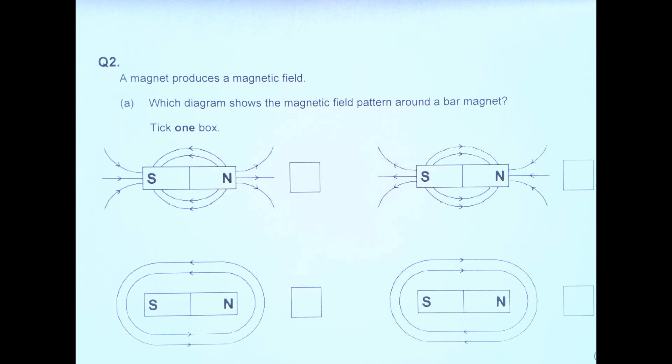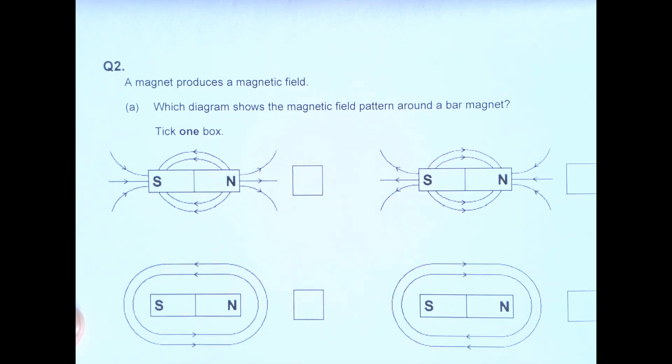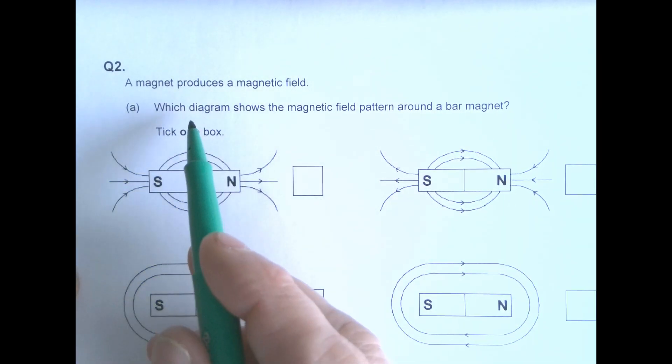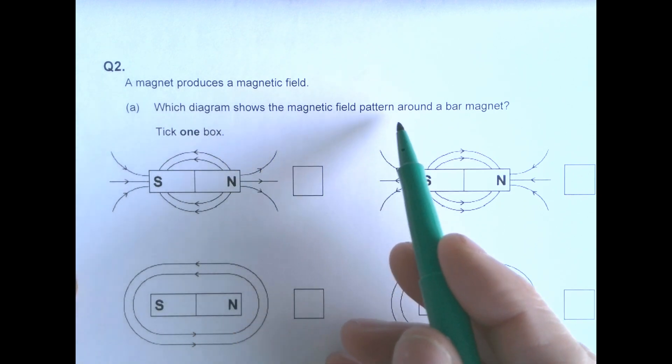Magnets and magnetism question 2a and b. A magnet produces a magnetic field. Which diagram shows the magnetic field pattern around a bar magnet?